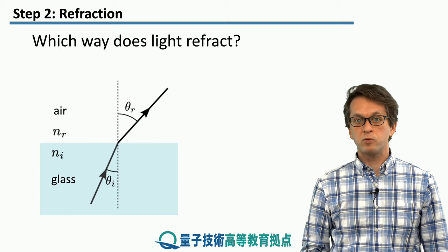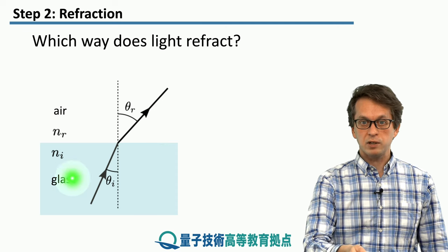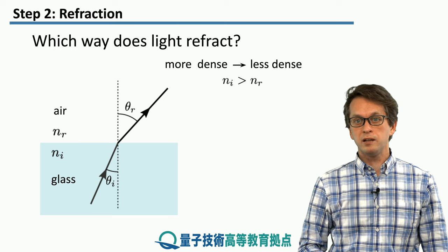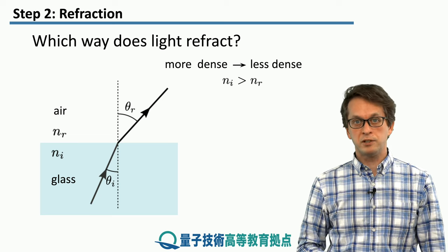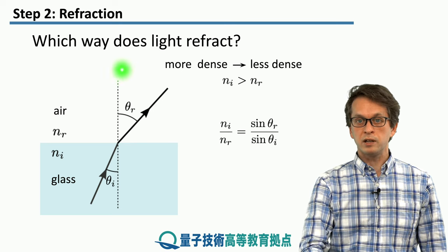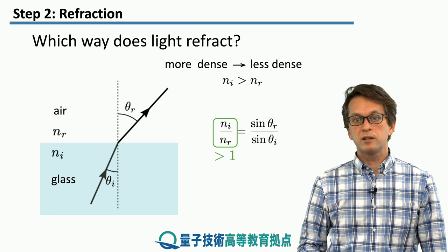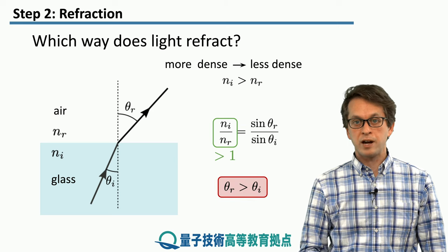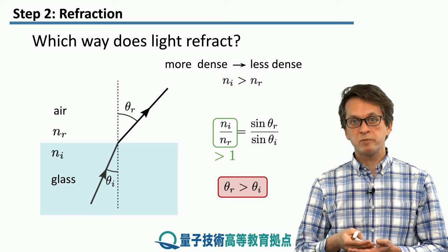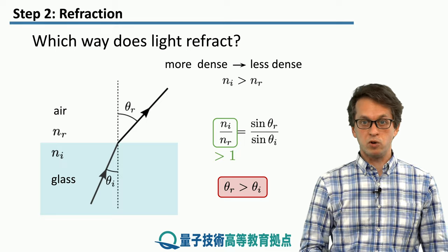Now, what happens in the opposite scenario when we're traveling from a more dense medium into a less dense medium? We can go through the same calculation again, but this time we assume that n_i is larger than n_r. We substitute it in, and we see that the ratio on the left-hand side of n_i/n_r is larger than 1. Therefore, we conclude that the angle of refraction has to be larger than the angle of incidence. So if we're going from a more dense medium into a less dense medium, we are refracting away from the normal.